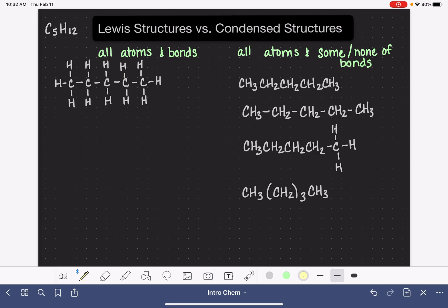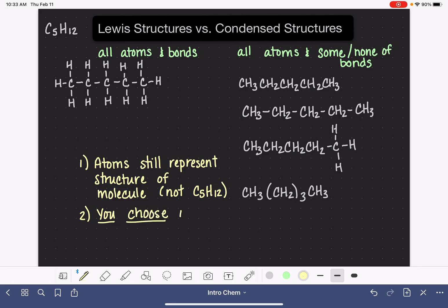So the point, I guess, kind of notes to take away from this. Number one, the atoms, when you're drawing a condensed structure, the atoms are drawn in a way that still represents the structure of the molecule. They're still communicating information about how the molecule is put together, not just saying C5H12, which tells us nothing about how those atoms are put together. And then point number two, you get to choose which bonds you want to show and which bonds you leave out. There's really no right or wrong way to do it.